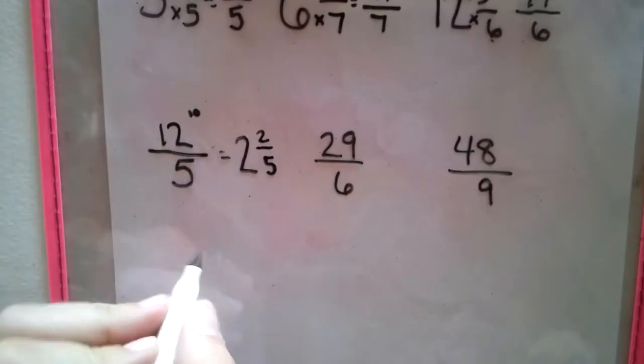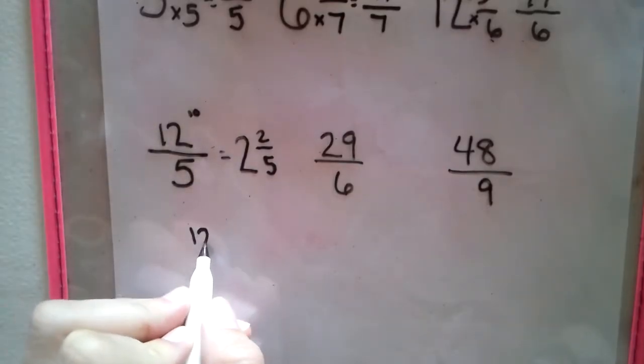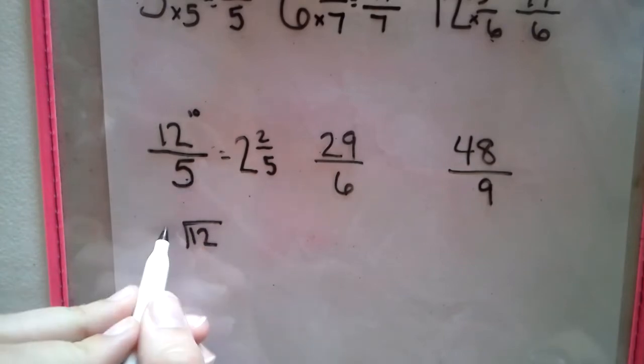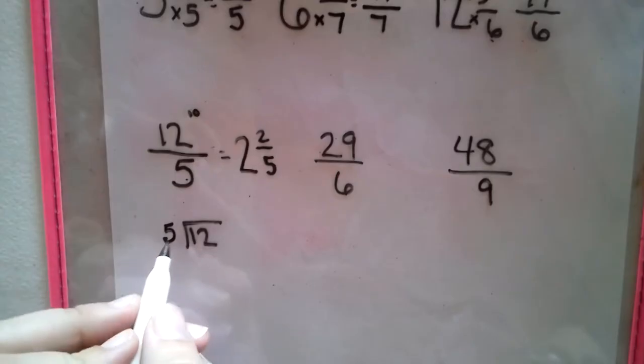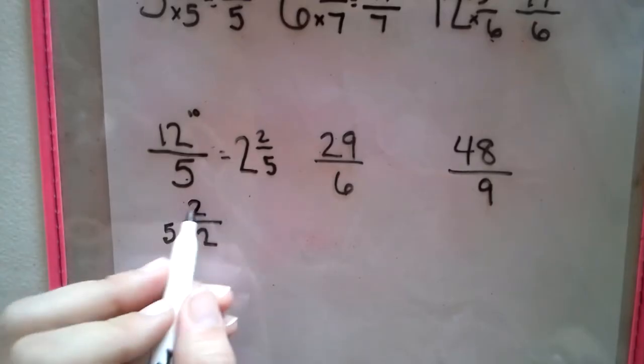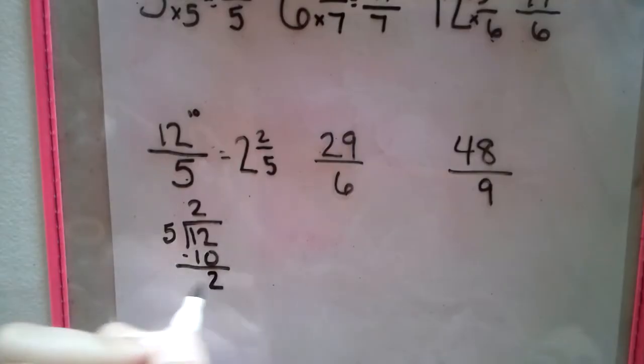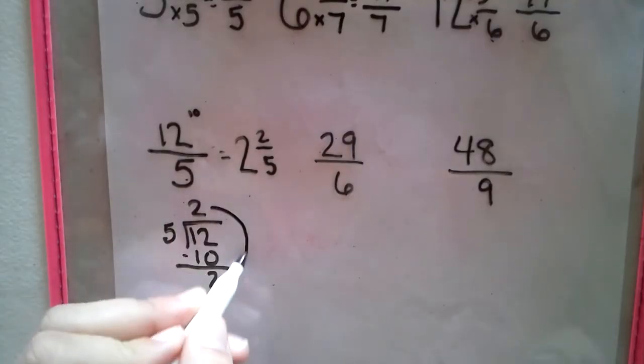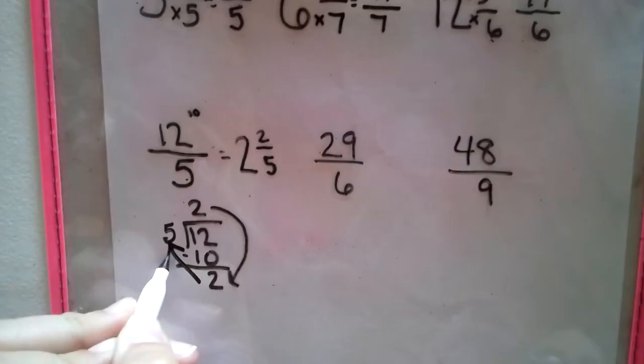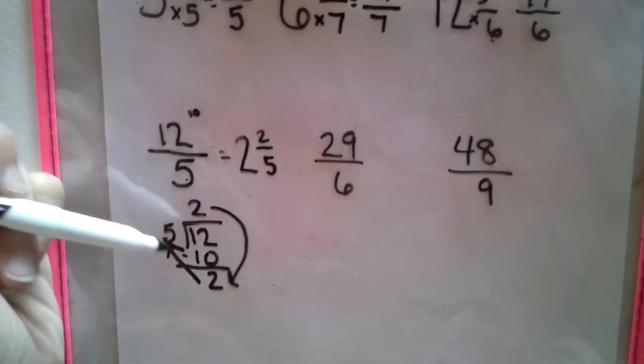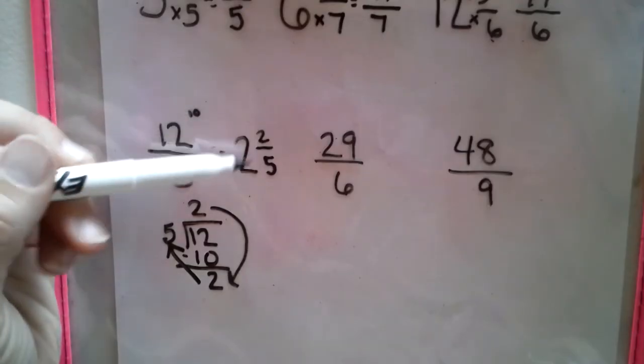Another way of looking at this is to make it a division problem. The numerator is inside the division box, which is the dividend, and the denominator is the divisor. And how many fives are in 12 is two. Five times two is 10. We subtract, we get two leftovers, and there's our answer: two and two-fifths. That's where the two is, and then this is the fraction part, two-fifths.